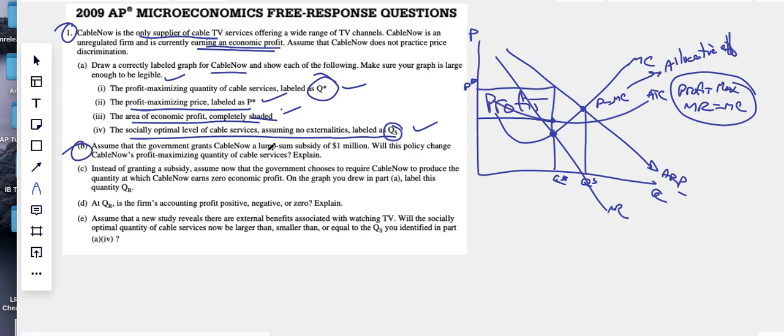Assume the government grants cable now a lump sum subsidy of a million. Will this policy change their profit maximizing quantity? We know lump sums.